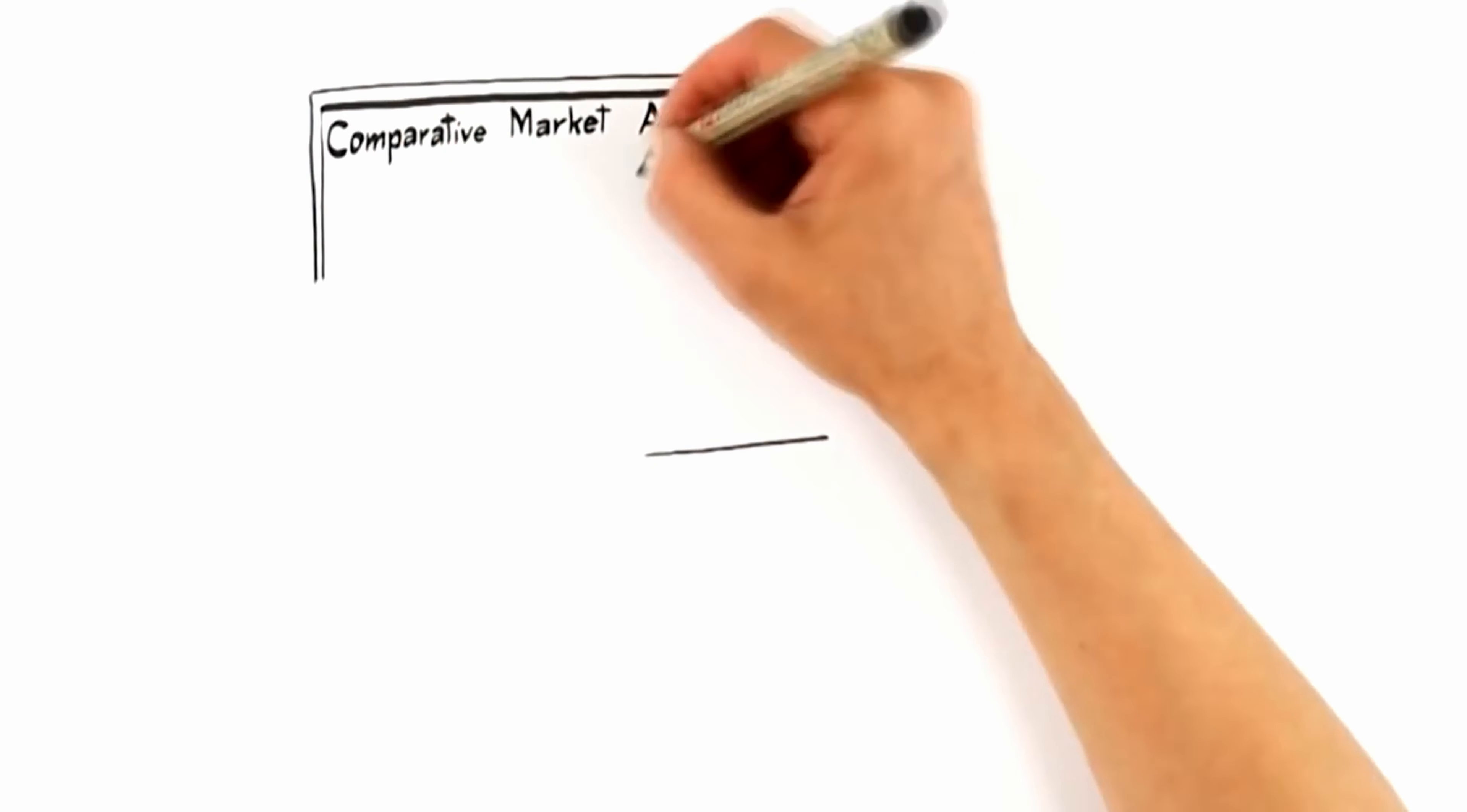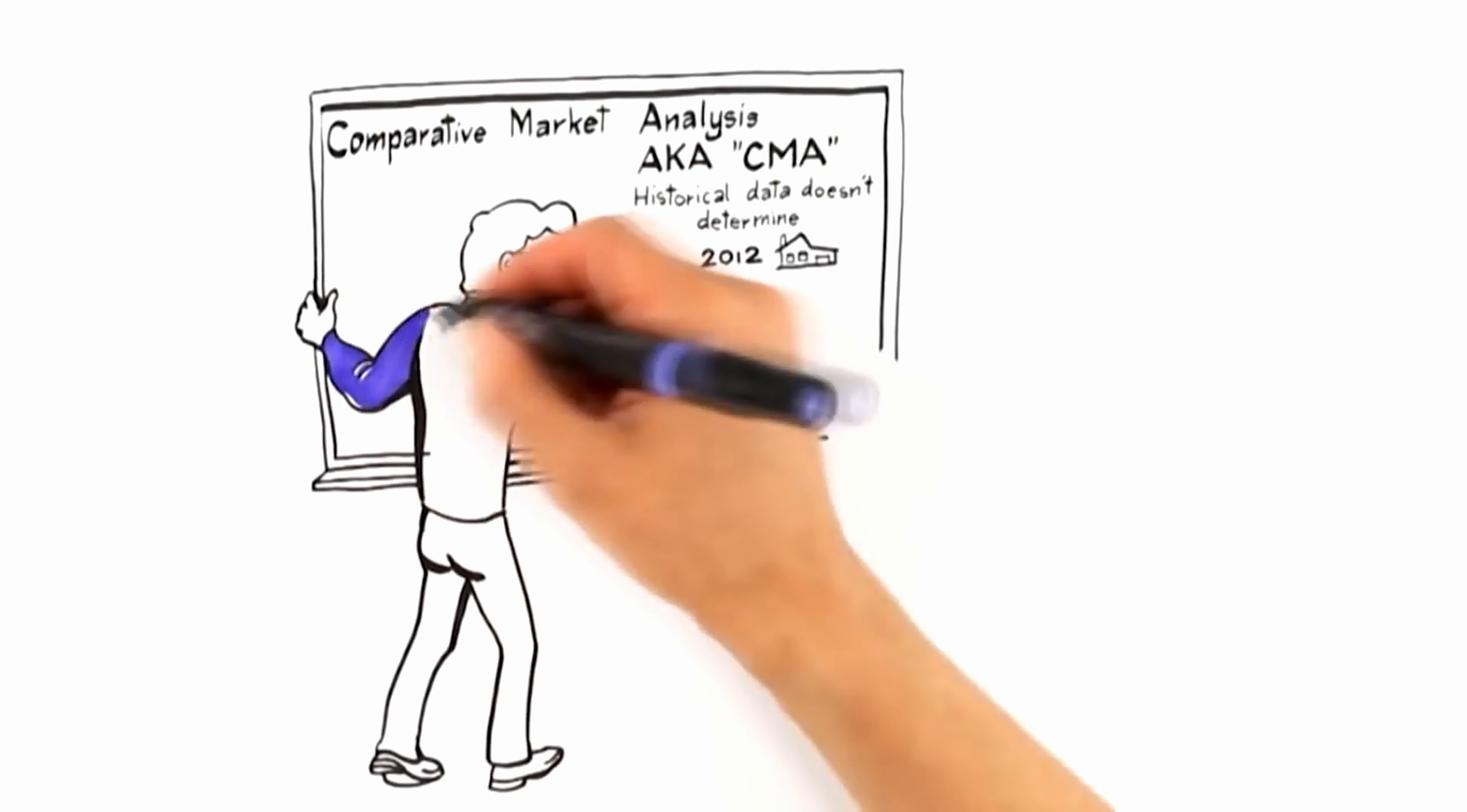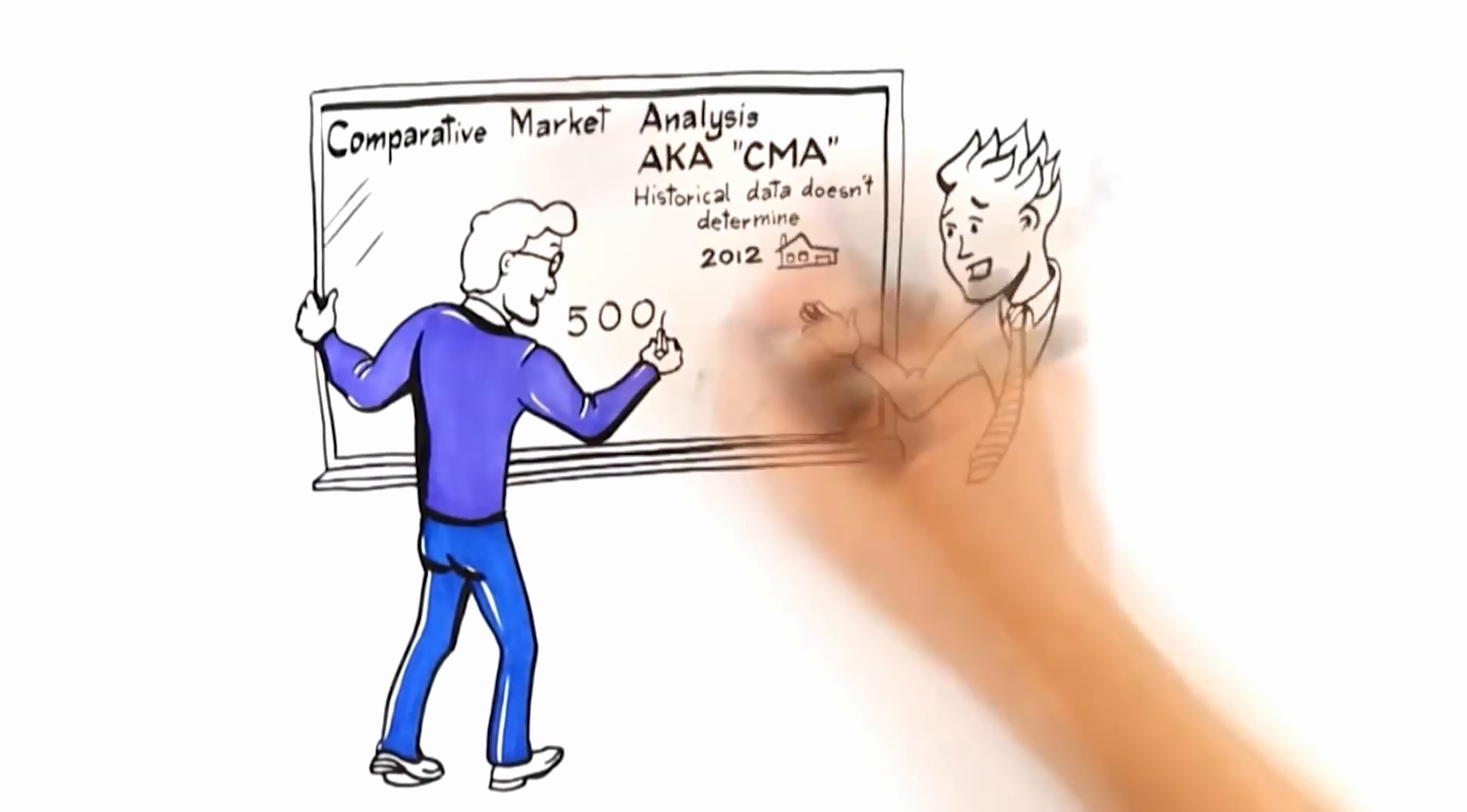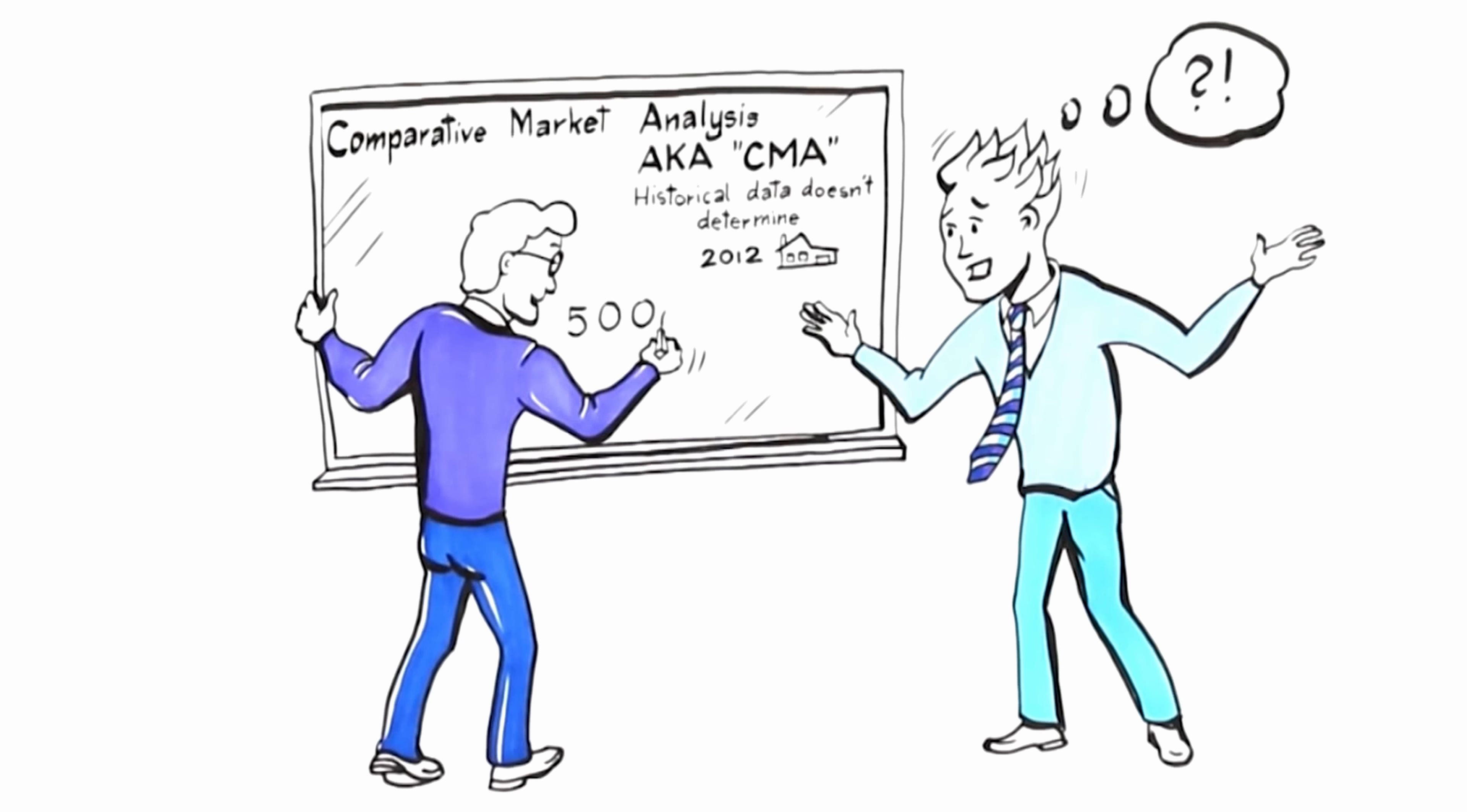Let's start with number one, pricing expertise. Traditionally, agents price homes using what is called a comparative market analysis, also known as a CMA. This establishes the value of your home by comparing it to historical sales. What most agents don't realize is that historical data doesn't determine how you should position your home in today's market to attract the highest offer. This would be like driving your car while looking in the rearview mirror.